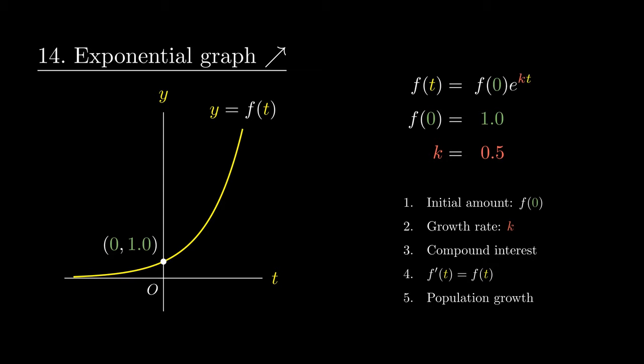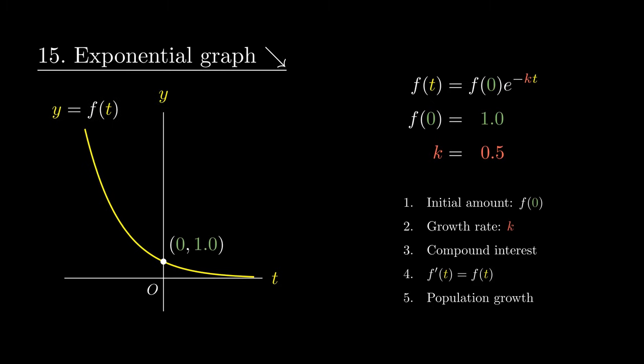If instead we had the equation e to the negative of kt, we would obtain an exponential decay. The numbers k and f of 0 play a similar role that they did in the case of exponential growth. However, k now does not represent the growth rate, but rather the decay rate. This decay rate is actually responsible for the half-life when analysing radioactive decay involving radioactive substances.